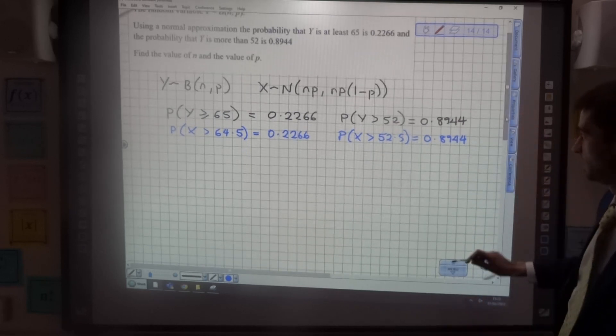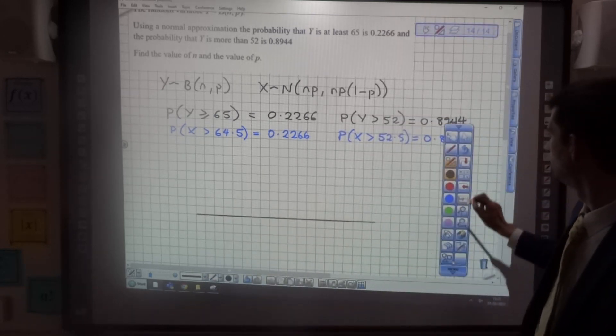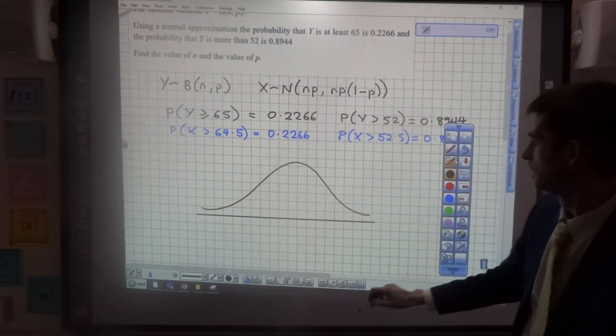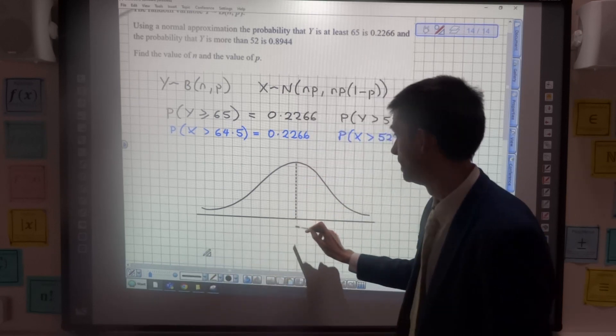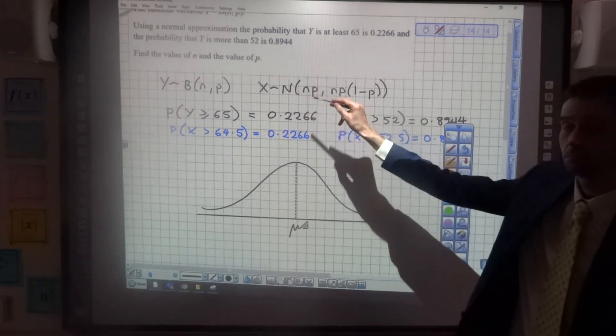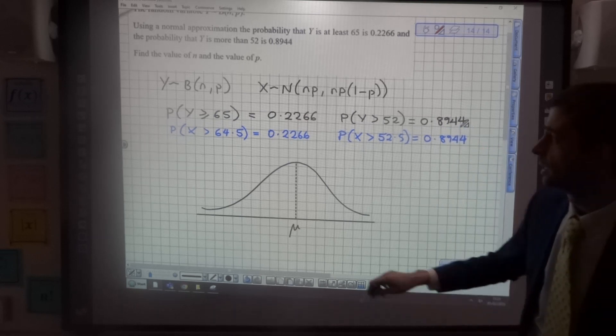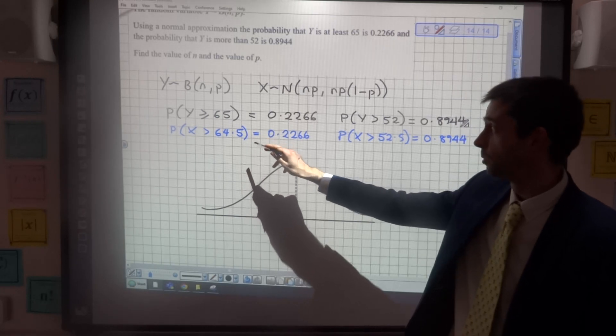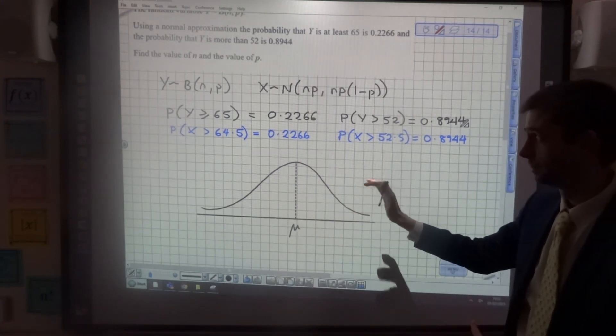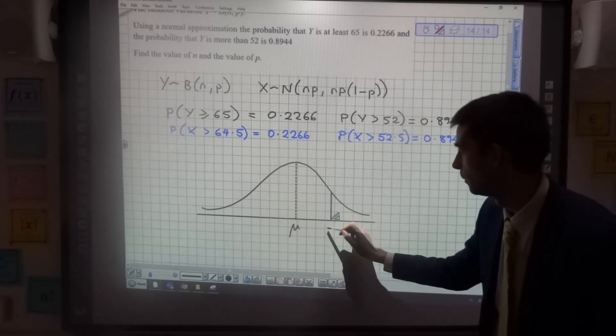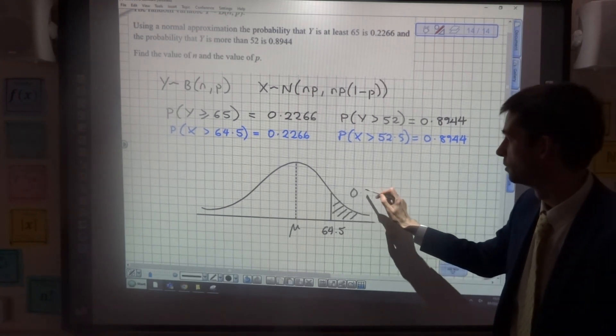Okay, now what I'm going to do is put all that information onto a normal distribution so that we can see what's going on. So here we go, a nice big normal distribution. We've got a mean line down the middle, but the mean we don't know, so we'll call it mu, which of course is np. We're told that the probability that X is greater than 64.5 is 0.2266. So greater than a value with less than a half probability, so X is going to be somewhere in here, and we've got 64.5. And we know that the area here is 0.2266.